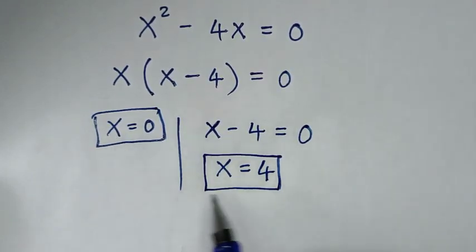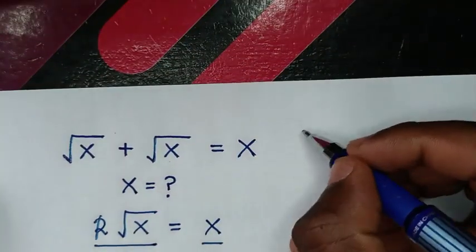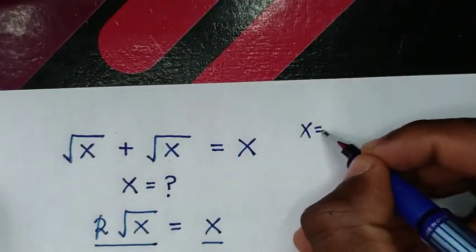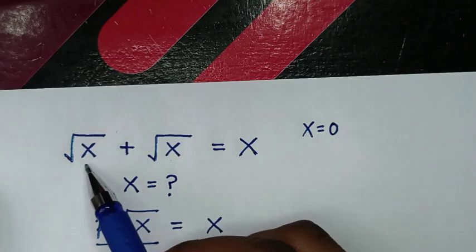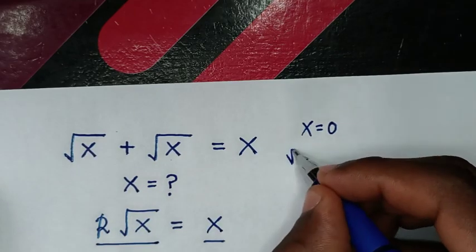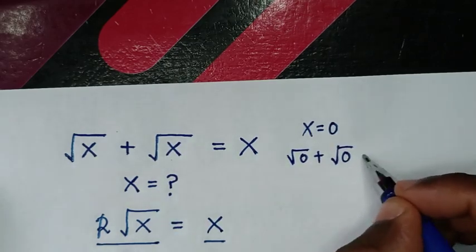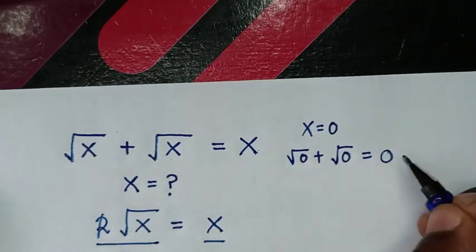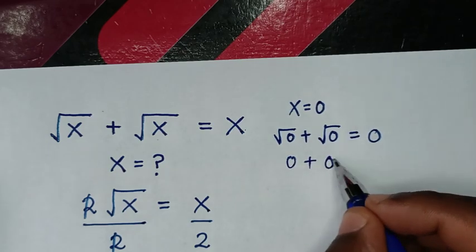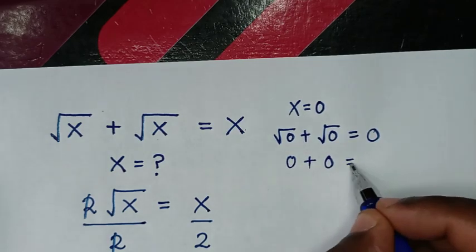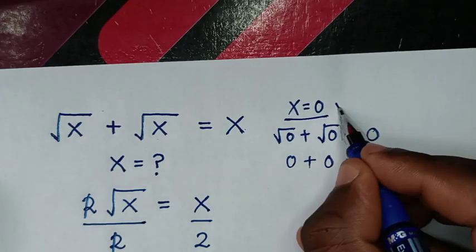Now let's check if these values of x are correct. From our problem, if we check for x equal to 0, we substitute 0 in: square root of 0 plus square root of 0 is equal to 0. Since square root of 0 is 0, we get 0 plus 0 is equal to 0. So the value x equals 0 is correct.